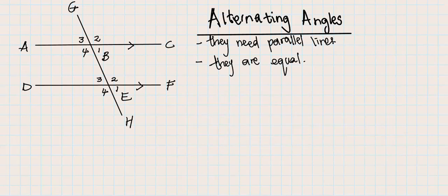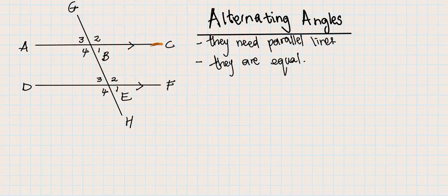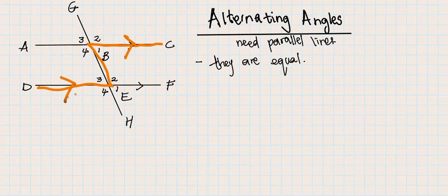There are only two pairs here of alternating angles. The first pair that we see is this one - there's a Z formation here and this line is parallel to that line. Therefore, if those are parallel lines, it means these angles in the armpits are equal.